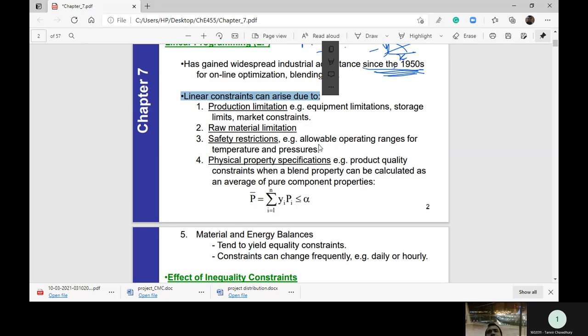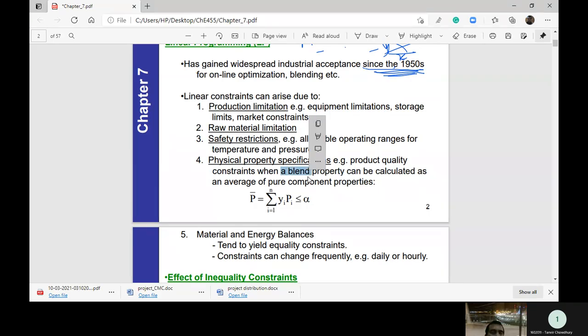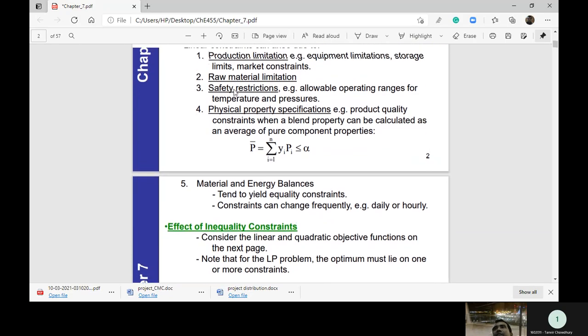We already know the material energy balance equation. So this is a linear equation. We have to use the terms of the constraint. Physical property is a product quality constraint. We have to use the refinery, calculate the average. We have to use the safety restrictions and the pressure, the dust, the overflow, the blow down. We have a limit. We don't have inequality.